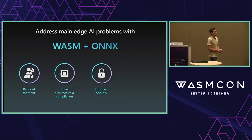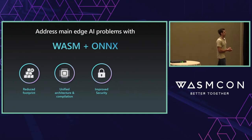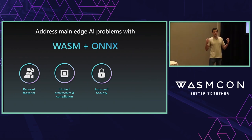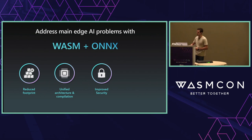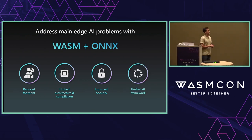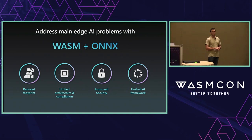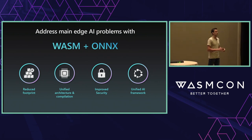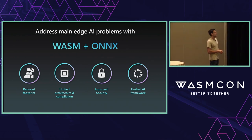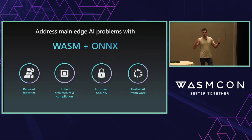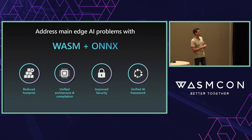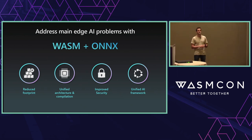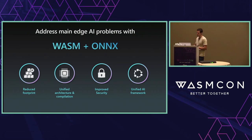Third: improved security. We know containers have some flaws. WebAssembly's security posture is much better, with a deny-by-default approach. Finally, by using ONNX, you get a unified AI framework. ONNX is an open-source standard for compiling models. You can have different models — PyTorch, TensorFlow — and use a unified pipeline converting them all to ONNX. Then you always use WebAssembly plus ONNX to run your AI models.